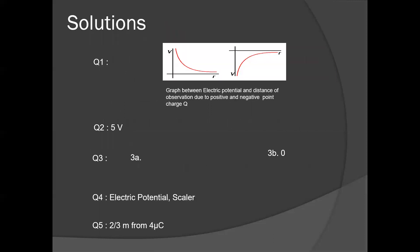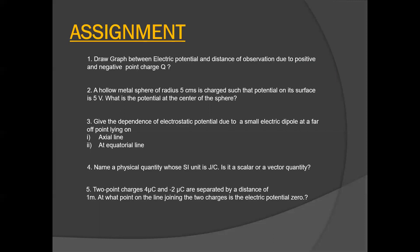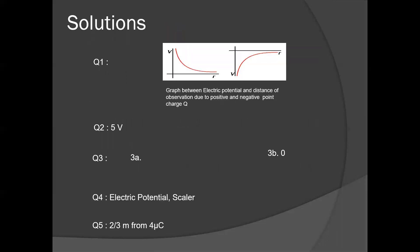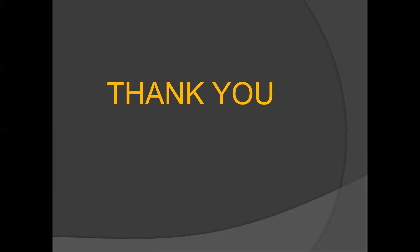Question 5: Two point charges 4 micro-Coulomb and minus 2 micro-Coulomb are separated by a distance of 1 meter. At what point on the line joining the two charges is the electric potential zero? Using the formula V equals kq/r, taking x as the distance from the 4 micro-Coulomb charge, the remaining distance is (1−x) from the minus 2 micro-Coulomb charge. Setting net potential to zero and solving, it comes out x equals 2/3 meters from the 4 micro-Coulomb charge. Thank you.